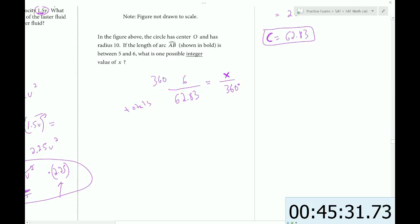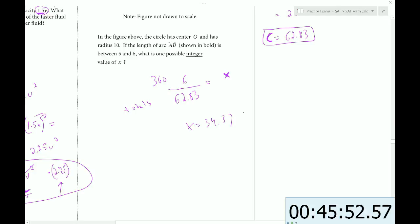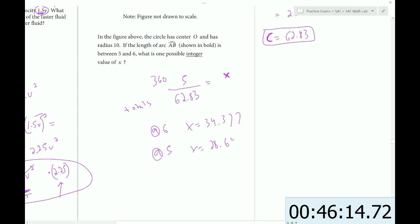So we just have to multiply by 360 to solve for X. So we'll grab the calculator. We do 6 divided by 62.83 and then times that by 360. We get 34, so X = 34.37. And then if we try it at 5, we'll do 5 divided by 62.83 and we multiply that by 360, and we get 28.64. So some number in between there. So let's just use 29. We could also use 30 all the way up through 34.